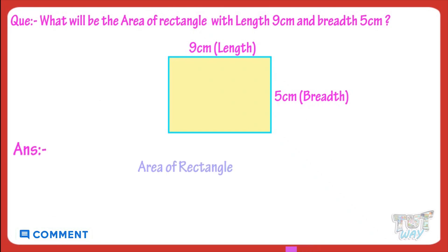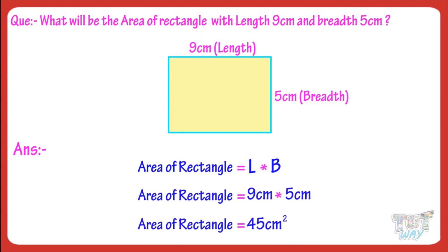We know area of rectangle is length multiplied by breadth. Length and breadth are 9 and 5 cm. So, area equals 45 cm square.